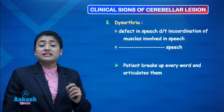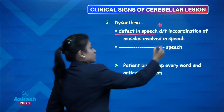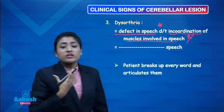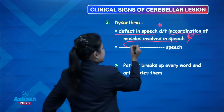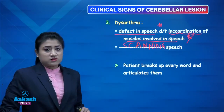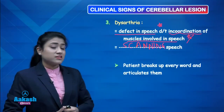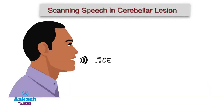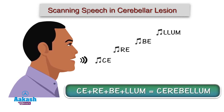The next clinical sign is dysarthria — a defect in speech due to incoordination of muscles involved in speech, leading to dysarthria. This speech has a special name: scanning speech. In scanning speech, the patient breaks every word and articulates them. For example, if I ask a cerebellar lesion patient to say 'cerebellum,' they will say: 'ce-re-bel-lum' — breaking up every word and articulating them. That is scanning speech.